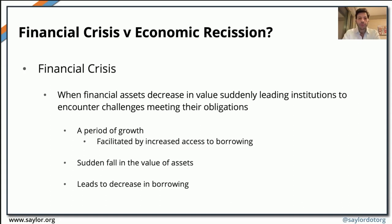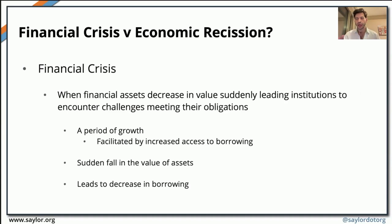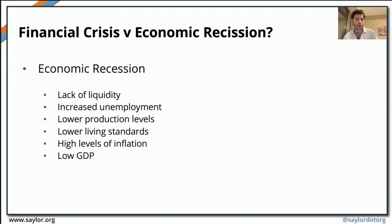When we're talking about financial crises, it's normally a period when a sudden decrease in asset value happens. Because of that, this sudden decrease in asset value leads financial institutions to encounter particular challenges related to meeting their obligations. We can identify a series of events: first, we have a period of growth, normally facilitated by increased access to borrowing. Then after this period of growth, we have a sudden fall in the value of assets, which leads to a decrease in borrowing, and so we encounter a financial crisis.